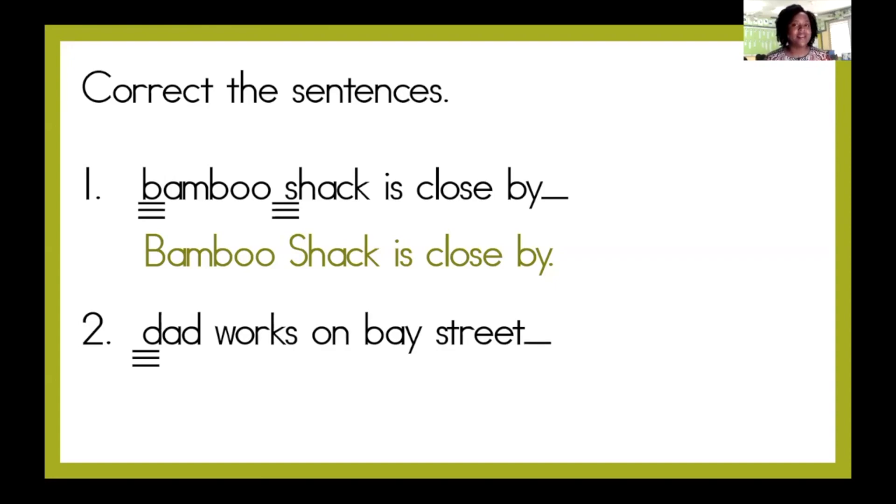But something else is going on with this sentence that needs fixing. Think very carefully. Let's read it again. Dad works on Bay Street. Bay Street is the name of a place and we said the names of people, places, animals, and things have to be capitalized. And so we need to capitalize the B in Bay and the S in Street. Awesome job.